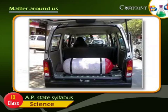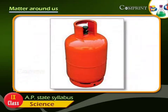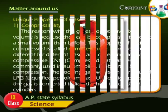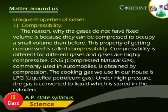CNG is commonly used in automobiles. Compressibility is obtained by compression. The cooking gas we use in our house is LPG. Under high pressure, the gas is converted to liquid, which is stored in the cylinders.